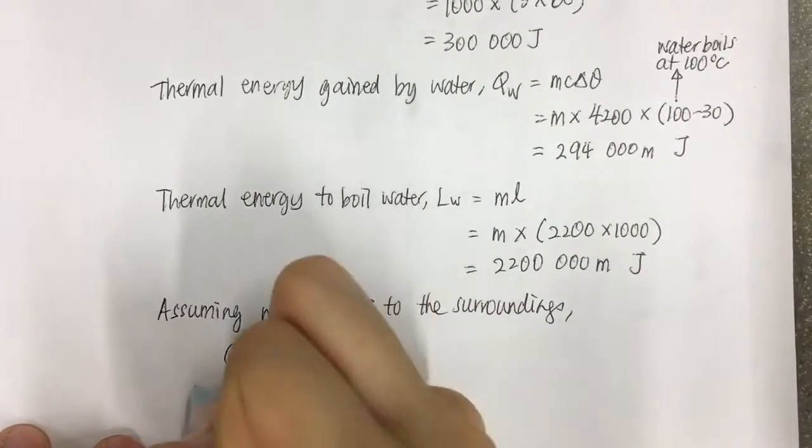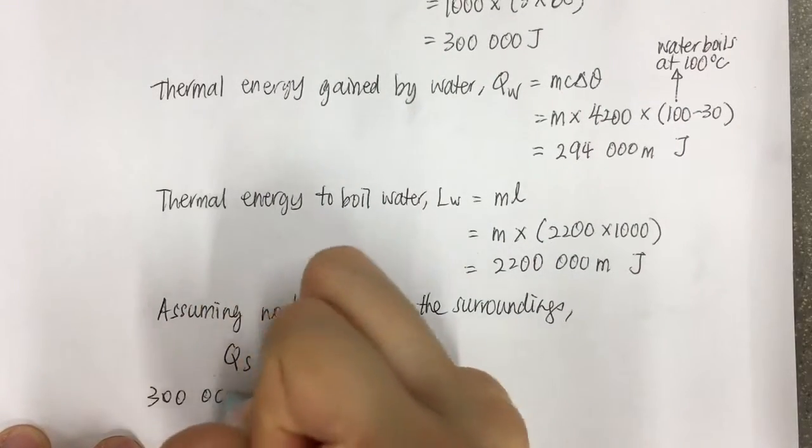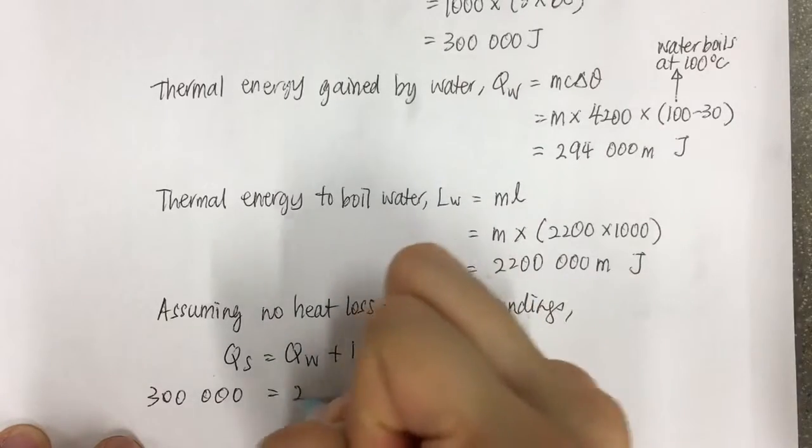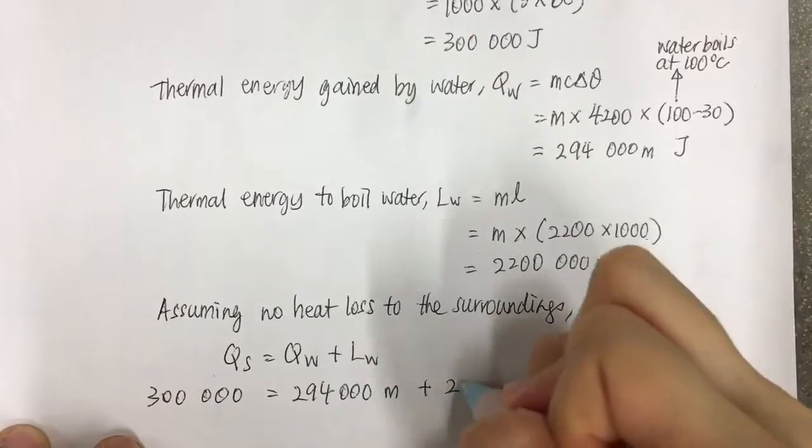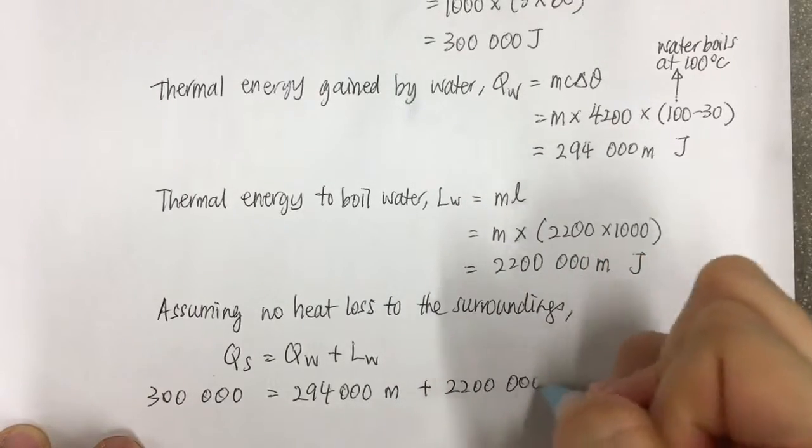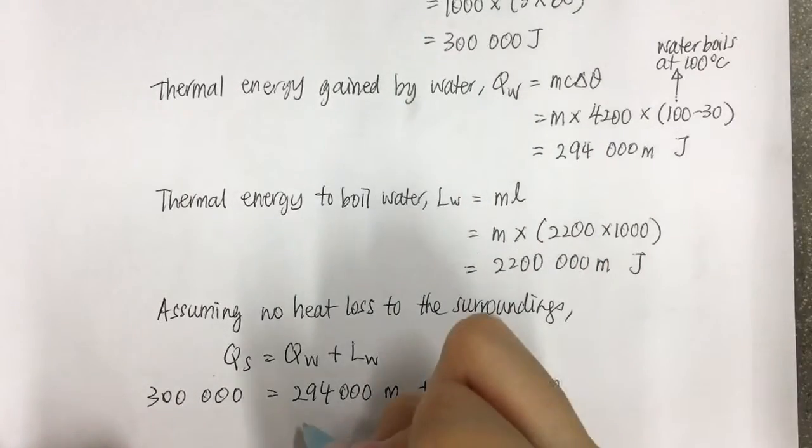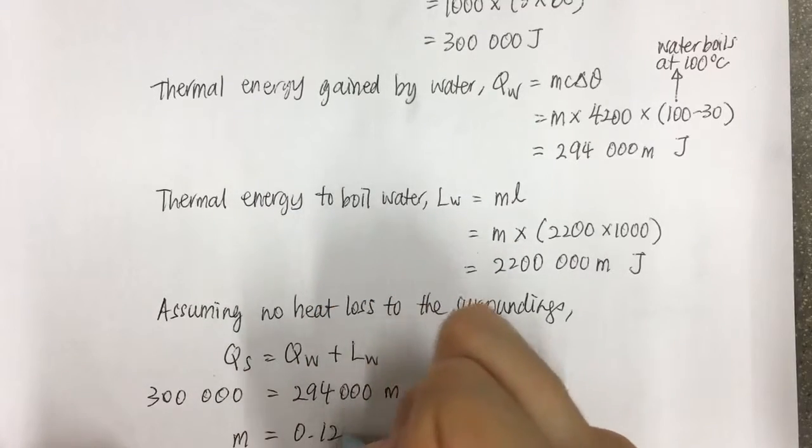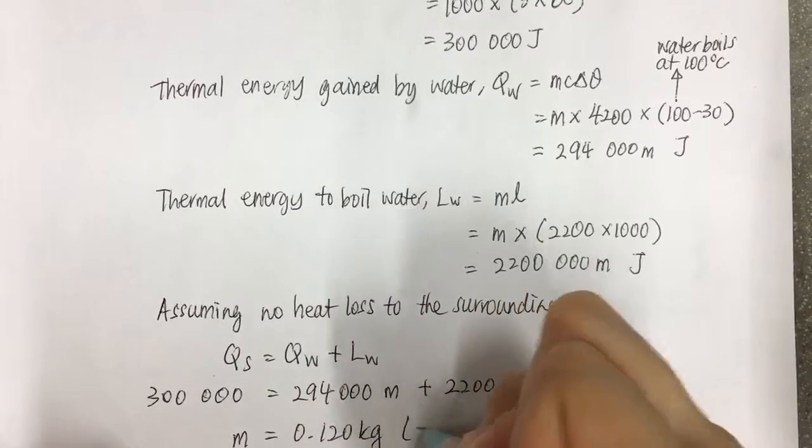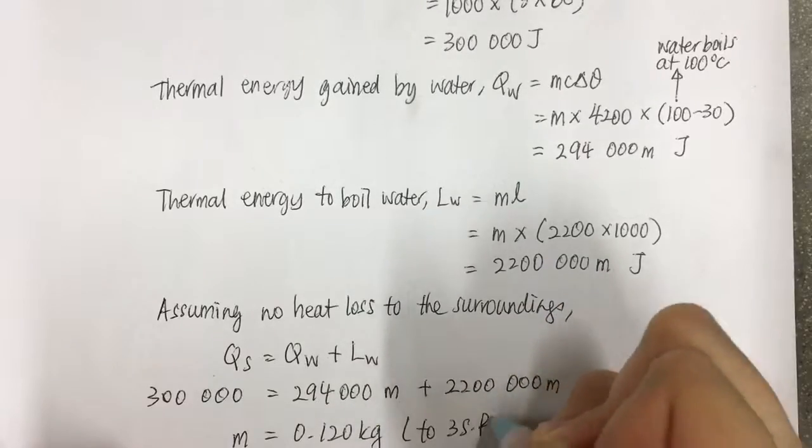So Qs is 300,000, Qw is 294,000m, plus 2,200,000m. So you find out m is equal to 0.120 kg to 3 significant figures.